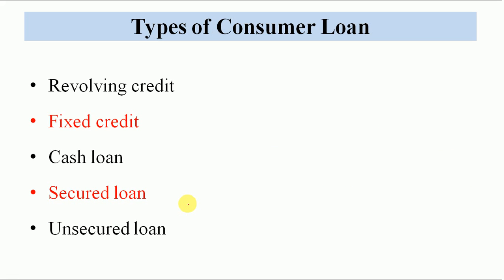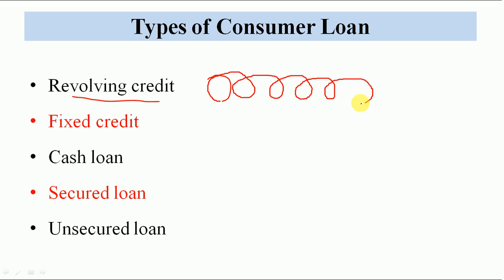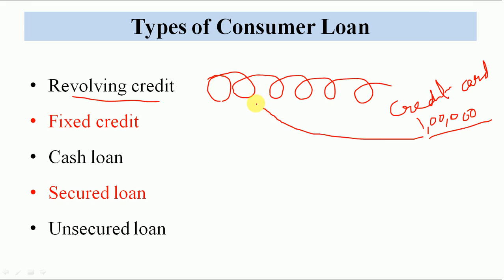Kis tarah consumer loan mil sakte hai — sabse pehla hai revolving credit. Revolving credit mein kya hota hai? Yeh ongoing credit arrangement hota hai bank ke saath aapka, jismein aapko credit revolving basis pe baar baar milta rehta hai. Jaisi aapne ek baar payment kar di, dubara phir aapko mil jayega. Yeh case hota hai credit card ki case mein — jaisi aapne credit card le rakha hai to credit card mein aapko maanlo ek lakh rupay ki limit mili hoi hai.